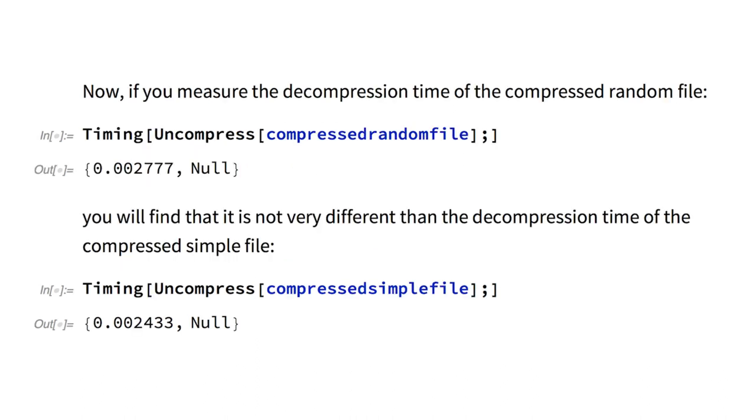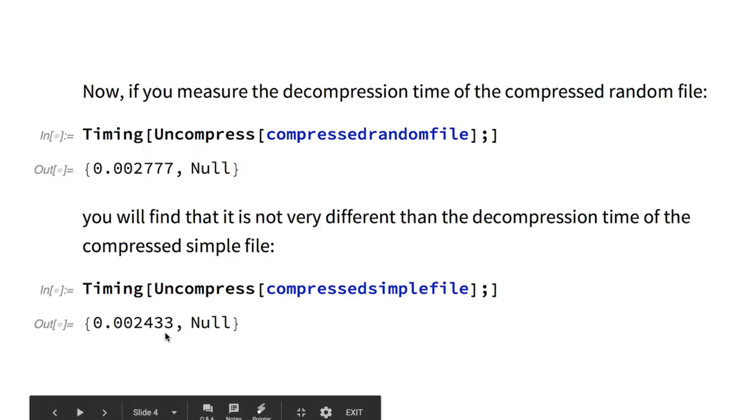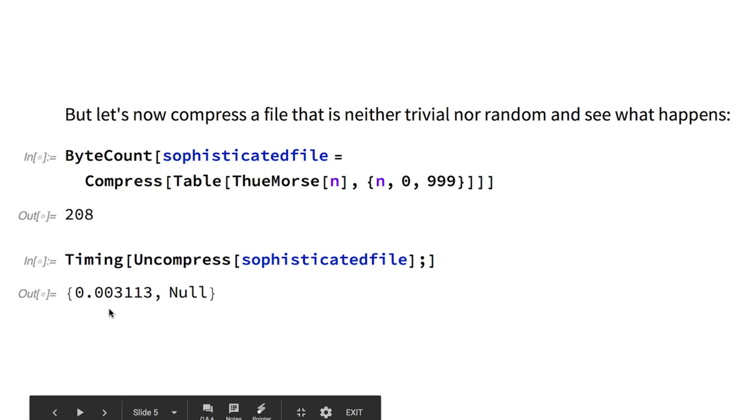It is right in the middle as expected, and the decompression time is also larger, or longer. Because now there are more decompression instructions than for the random file, and these instructions are less trivial than for the trivial file, and thus they require more computing time to reproduce the original TwoMorse sequence. This is exactly the core idea of this beautiful measure of logical depth.